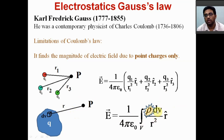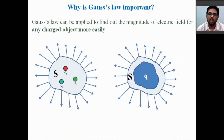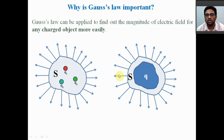That is the point where Gauss's law helps us to find out the electric field more easily. To understand this, let us draw two pictures. Here you can see an arbitrary closed surface S is constructed — one enclosing discrete point charges and another enclosing a continuous charge distribution. This closed surface is called the Gaussian surface.